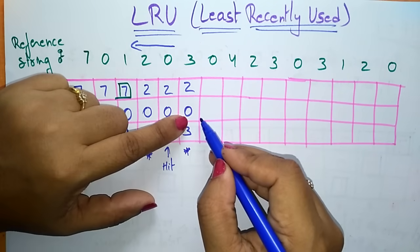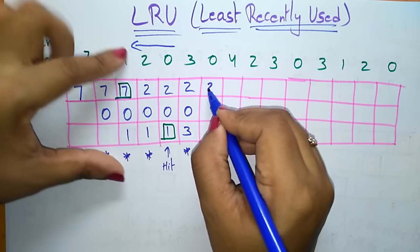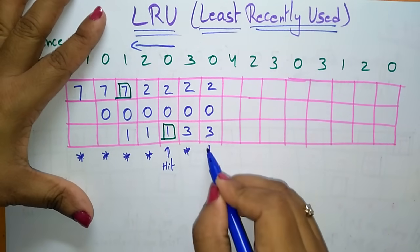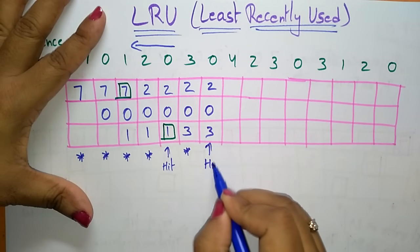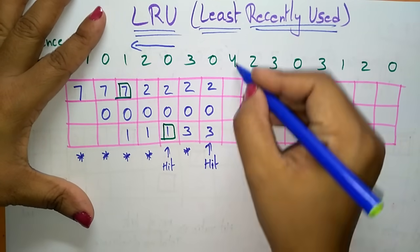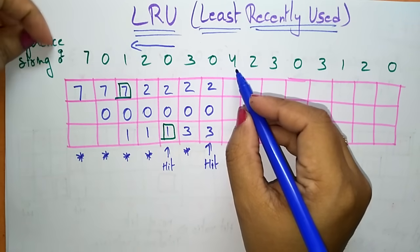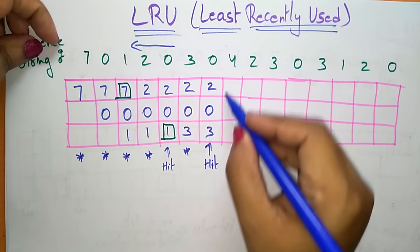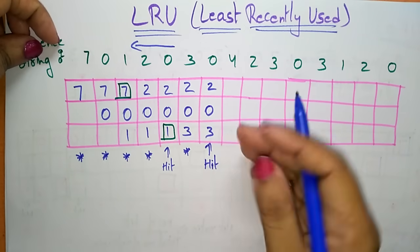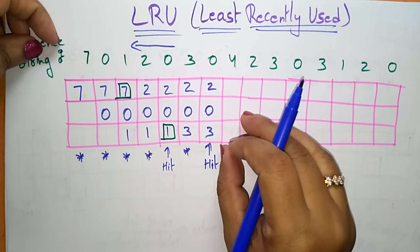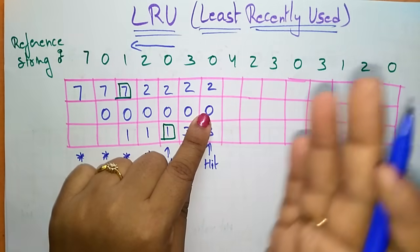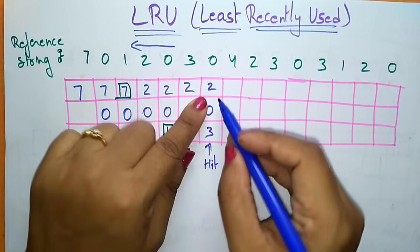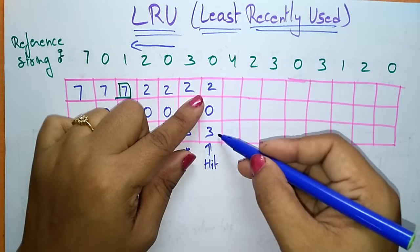Next I have to place 0, but 0 is already present in the frames — so this is a hit. Next, the CPU is demanding page 4. Page 4 is not present in the memory, so this is a page fault. I bring page 4 from the disk.